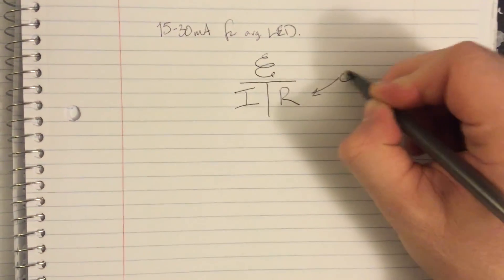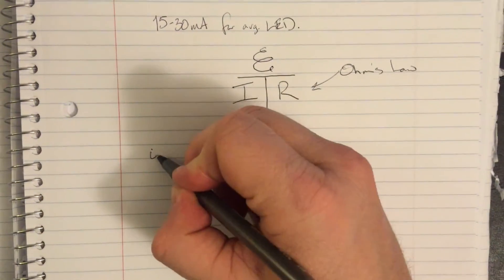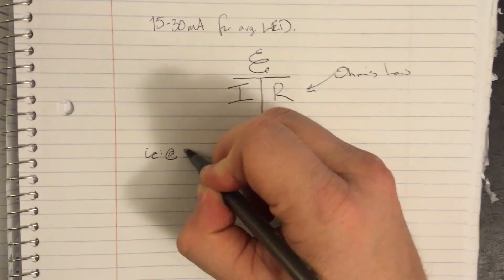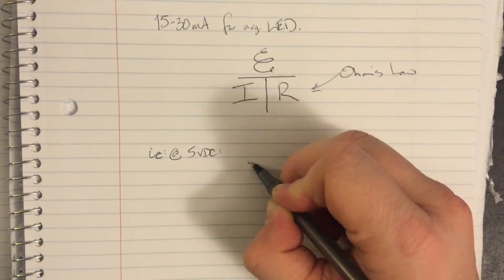I use the voltage of my system along with the maximum and minimum current allowable through an LED to calculate two resistances. Those two resistances are the top and bottom limits of my window for selection.